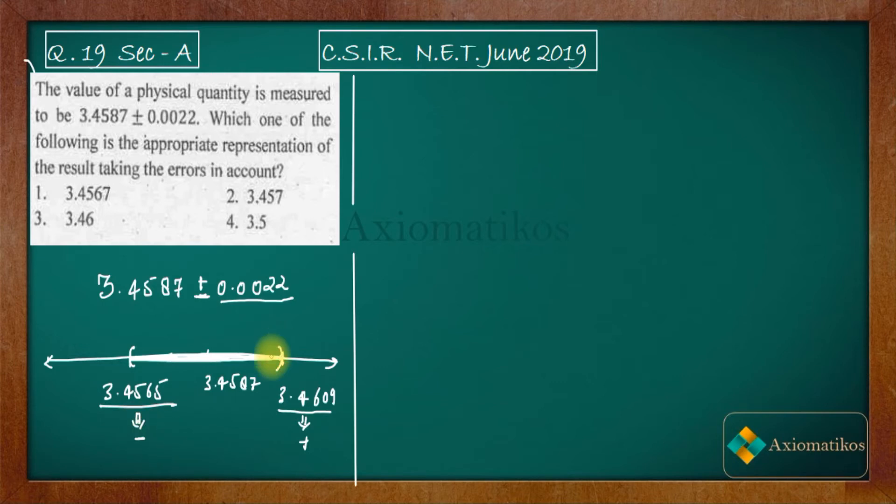Now what we are doing in the options, what is the problem? Problem is which one of the following is the appropriate representation of the result taking the errors into account. So what I want you to do: round off the numbers up to hundredth decimal.